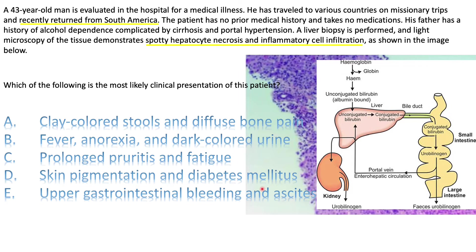Skin pigmentation and bronze diabetes is seen with hemochromatosis, but there is no mention of any family history of such a thing — his father is cirrhotic because of alcohol use, not hemochromatosis. Upper GI bleeding and sinusitis would be seen if he has portal hypertension — he doesn't; it's his father that has it. So the only correct answer is B.